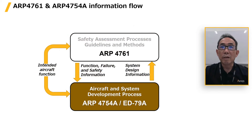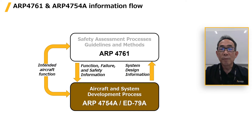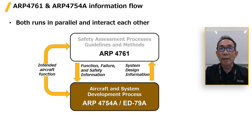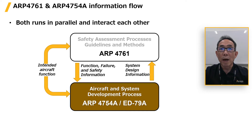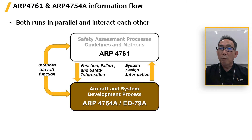Let's examine the connection between ARP 4761 and ARP 4754A. These two standards run in parallel but interactively. The system design information done in 4754A is used by 4761, and the function, fault, and safety information done in 4761 is used by 4754A.